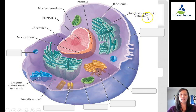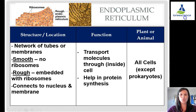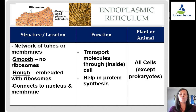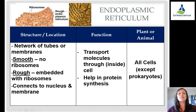Next is the rough and smooth endoplasmic reticulum. The rough ER has embedded ribosomes; the smooth ER does not. The ER is a network of tubes or membranes that connects the nucleus and membranes and transports things inside the cell. It's also the location of protein synthesis — ribosomes make proteins, dump them into the ER, and they are packaged and transferred throughout the cell. All cells except prokaryotes have endoplasmic reticulum.